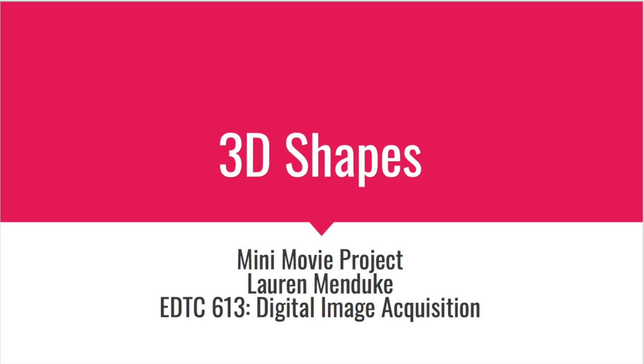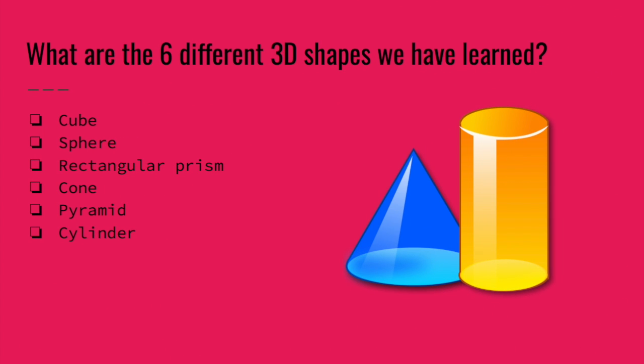The six different shapes we're going to learn about are called a cube, a sphere, a rectangular prism, a cone, a pyramid, and a cylinder. All of these shapes are 3D but they're a little bit different in their own way.